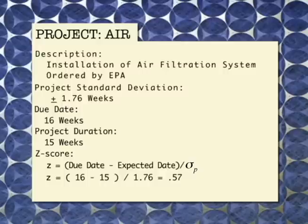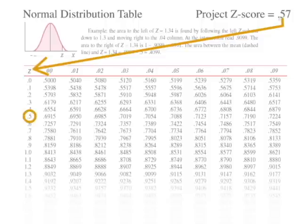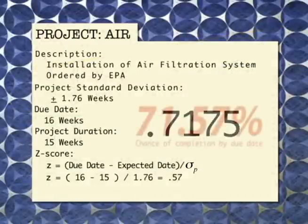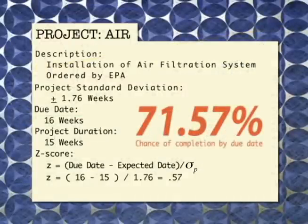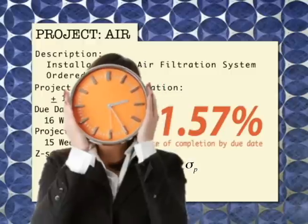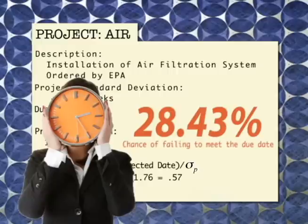What does that mean? It doesn't mean anything until you use a normal distribution table. On a normal distribution table, you find 0.5 on the left-hand side and 0.07 across the top — where they meet is 0.7157. What that means is that there's a 71.57% probability that you will finish this project by the 16th week. You should be worried, and your boss should be worried, because that also means you have over a 28% probability of not being finished on time.